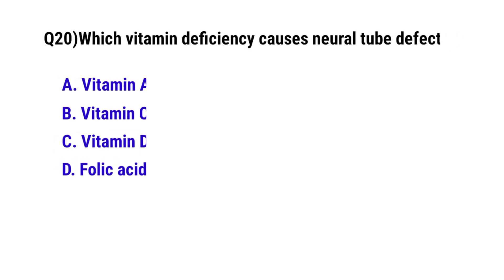Question No. 20: Which vitamin deficiency causes neural tube defects? The correct option is D: Folic acid.